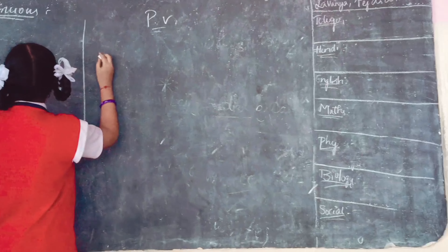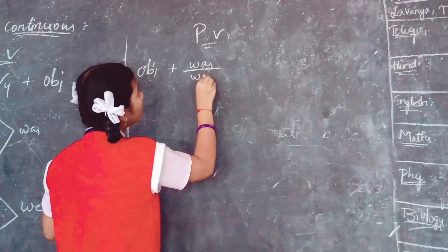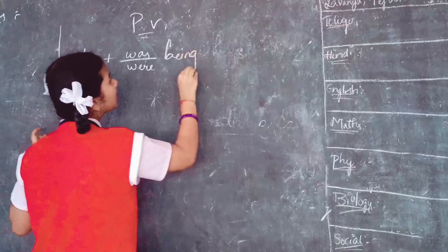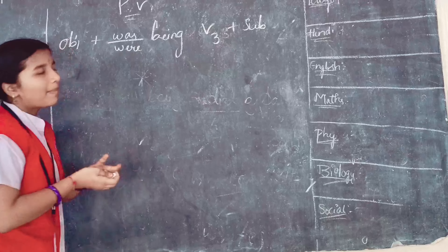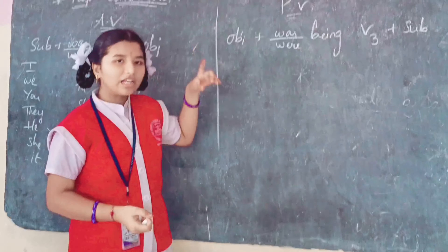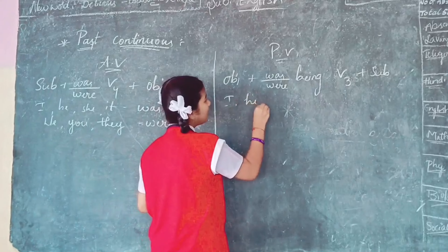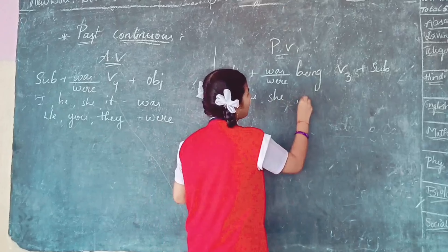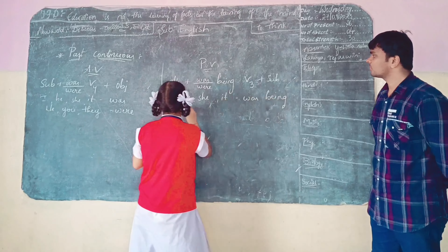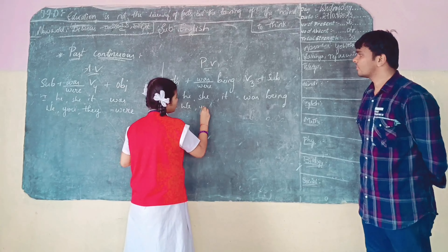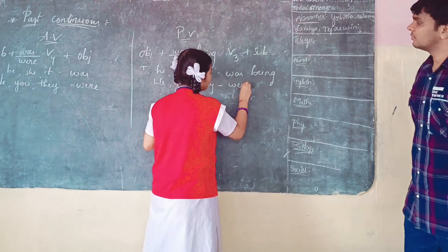The structure of passive voice of past continuous is: Object plus was/were plus being plus V3 plus by plus subject. In all passive voice structures, we only use the V3 form of the verb. I, he, she, it take 'was', and we, you, they take 'were'.